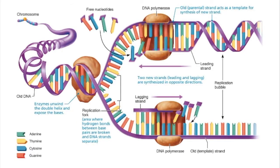DNA replication takes place when the DNA helix uncoils, the hydrogen bonds between its base pairs are broken, and each nucleotide strand of the double helix acts as a template for the construction of a complementary nucleotide strand.